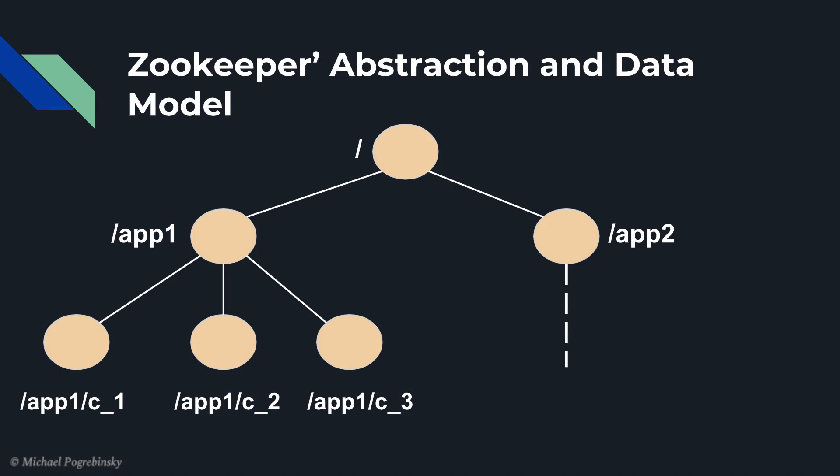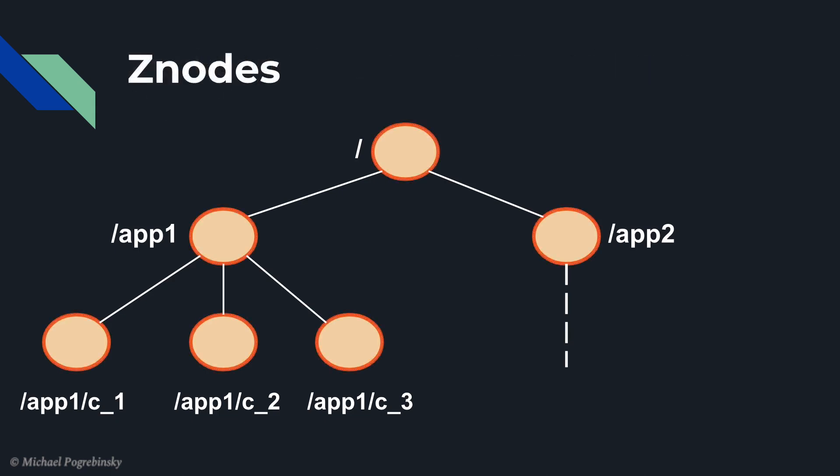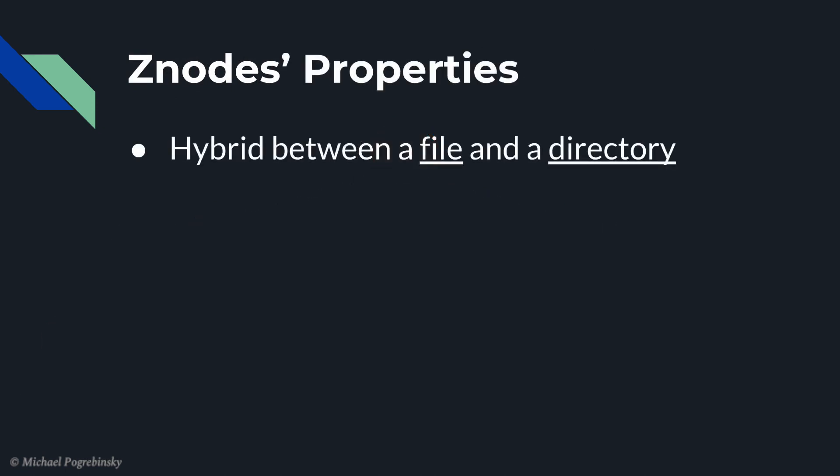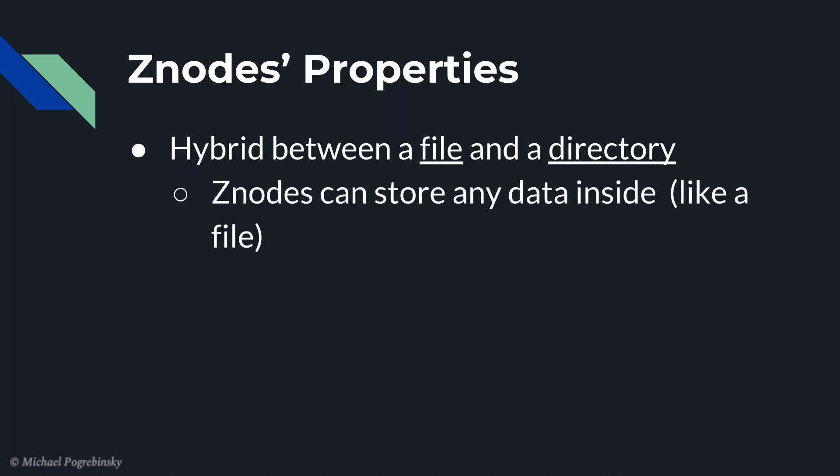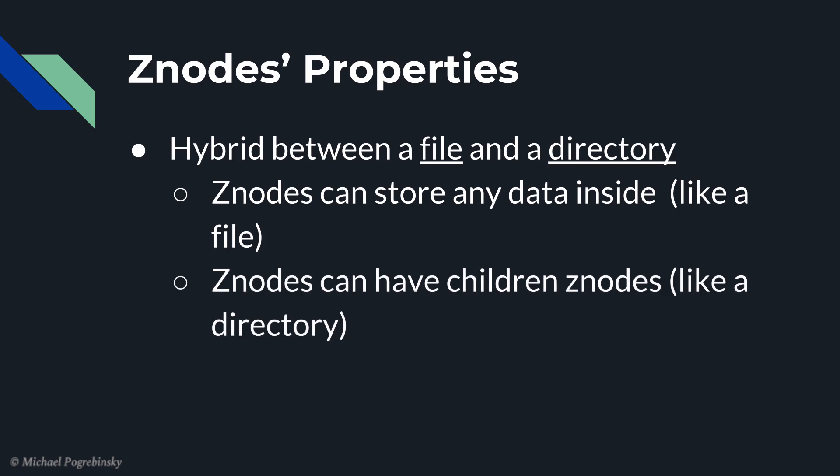On the other side of the equation, Zookeeper provides us with a very familiar and easy-to-use software abstraction and data model that looks a lot like a tree and is very similar to a file system. Each element in that tree or virtual file system is called a z-node. Z-nodes are kind of a hybrid between a file and a directory. They can store data inside, just like files, but they can also have children nodes, just like a directory.